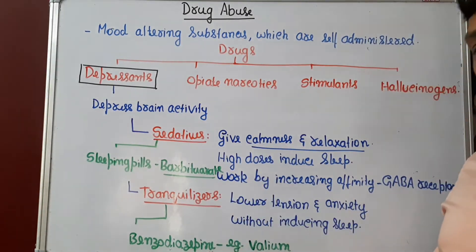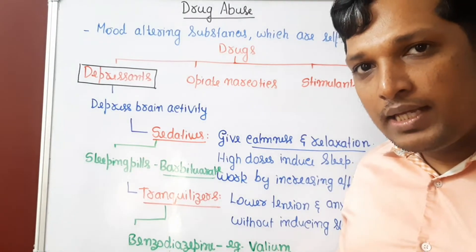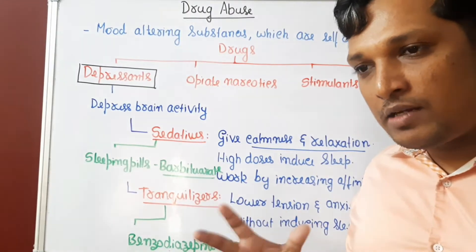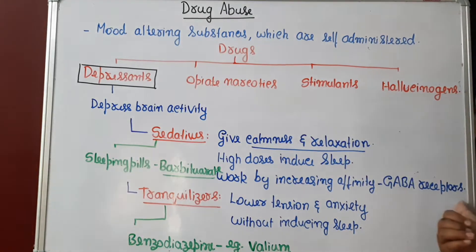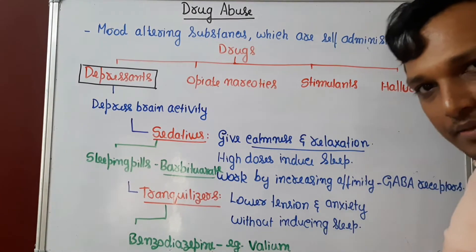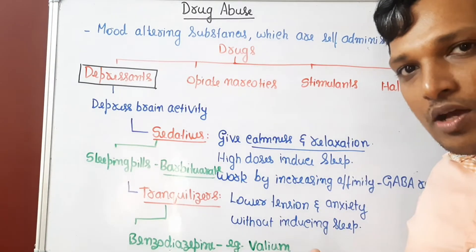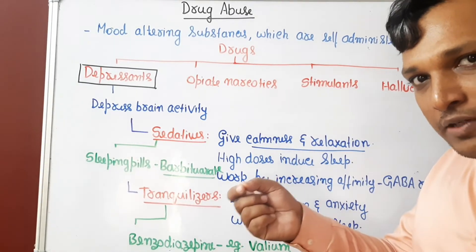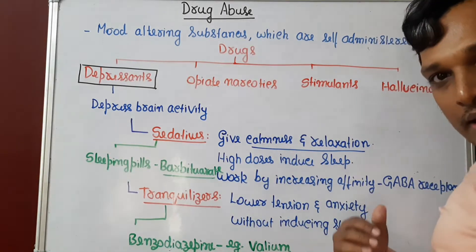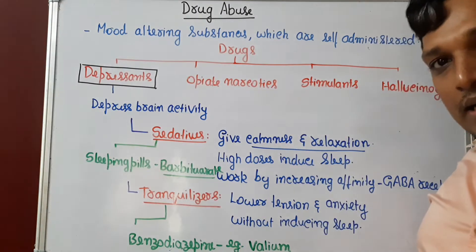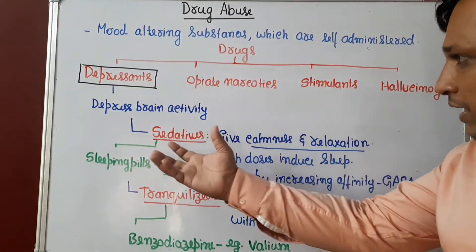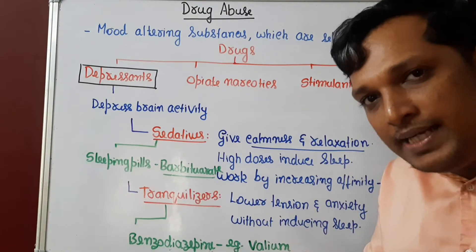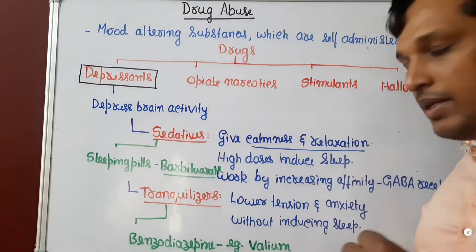How do depressants work? They work by increasing the efficiency of GABA receptors. In the brain or nervous system, there is a receptor known as GABA — gamma-aminobutyric acid. These are the receptors for the GABA neurotransmitter, which is an inhibitory neurotransmitter. When the GABA neurotransmitter binds to the GABA receptor, it lowers anxiety and tension. Sedatives increase the affinity of the GABA receptor so that the GABA neurotransmitter binds and brings about calmness and relaxation.